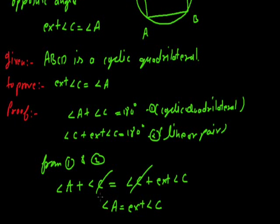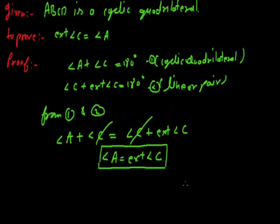So we have proved that the exterior angle of a cyclic quadrilateral is equal to the opposite interior angle. Thank you.